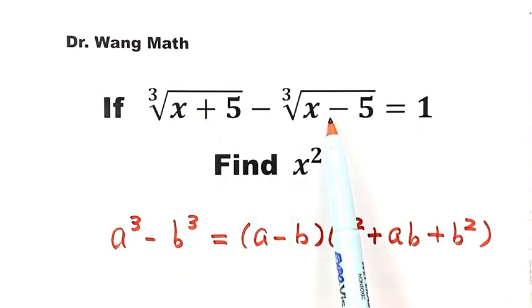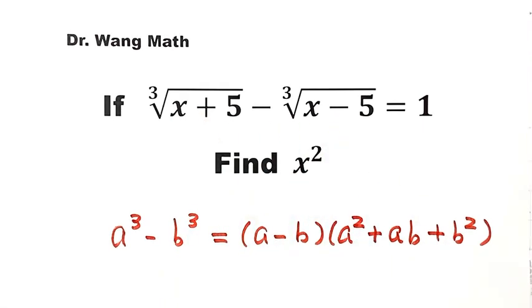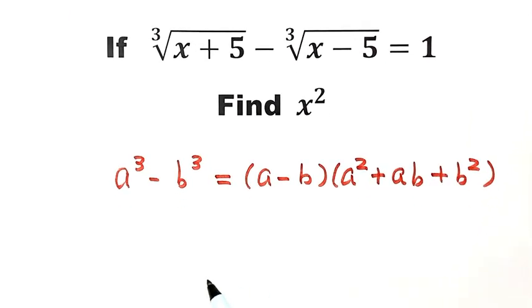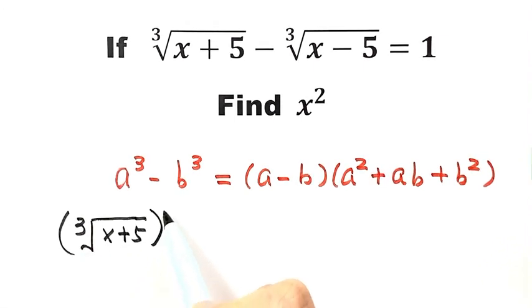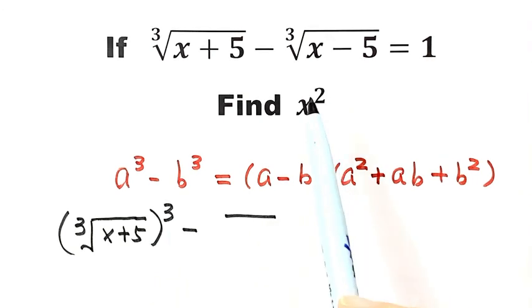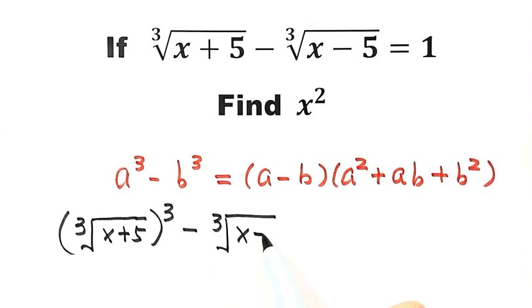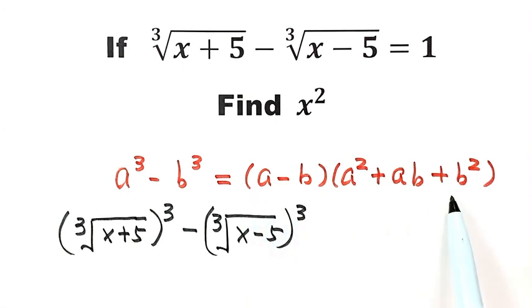We're going to apply this formula here. So the cube root of (x+5) is a, and the cube root of (x-5) is b. We raise each to the power of 3, then apply the formula.